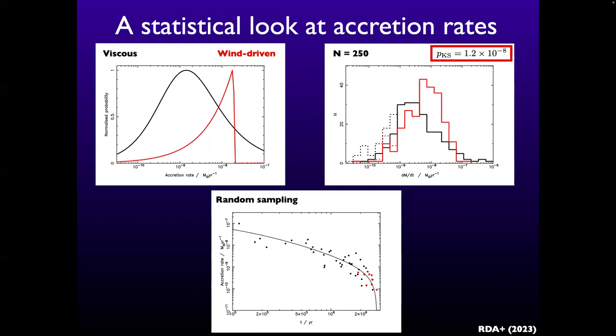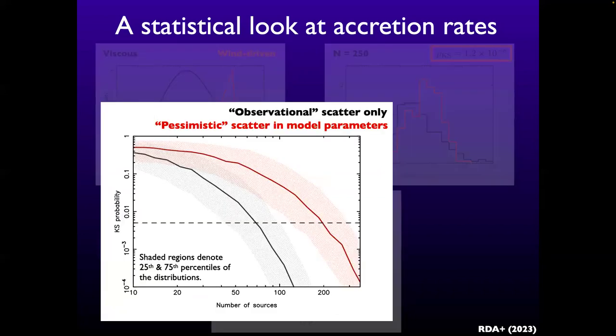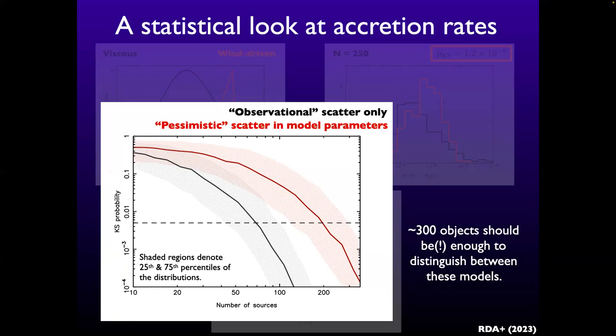We did many hundreds of thousands of KS tests. With 250 objects, the probability of the wind-driven and viscous distributions being drawn from the same underlying distribution is 10^{-8} — very clearly different. But that's two models with fixed parameters and no scatter, which is cheating. The more realistic test adds order-of-magnitude scatter to every parameter. The answer is always yes — you can still tell them apart — the question is how many objects you need. With no scatter, by 100 sources you can pretty much always tell them apart. With pessimistic scatter, you need 200–300 objects before separating them with confidence, but that's measurable.